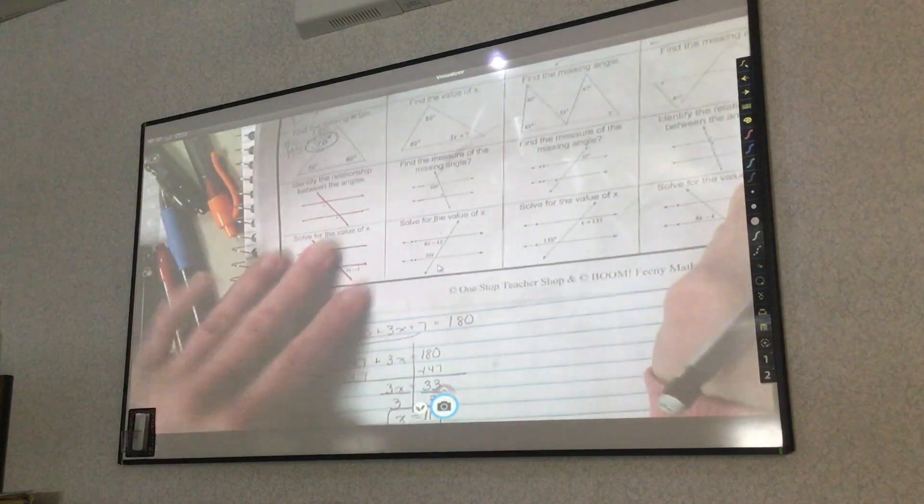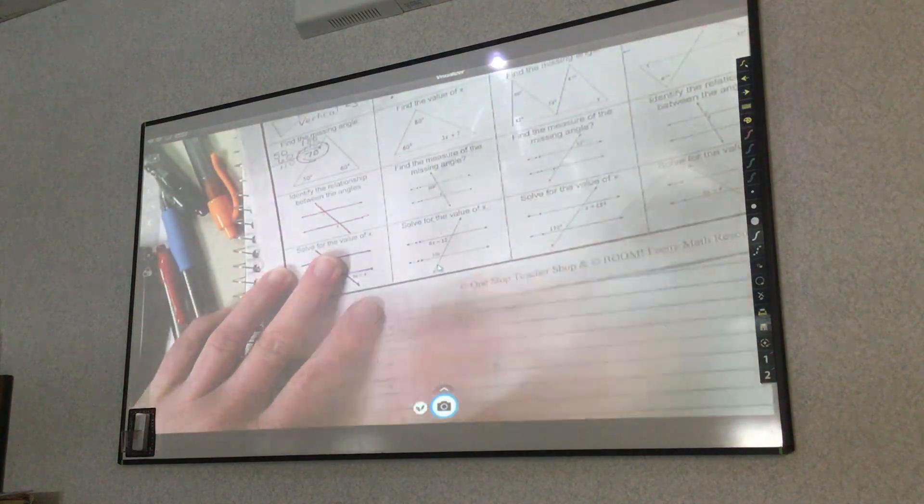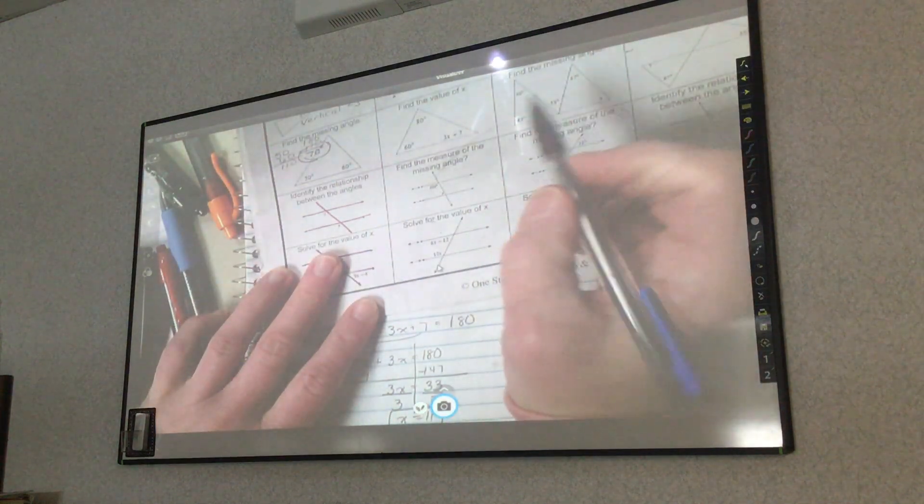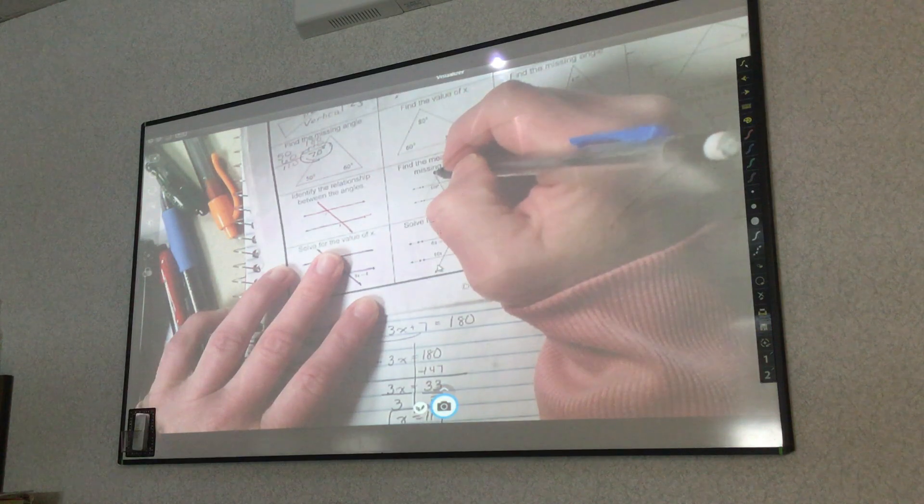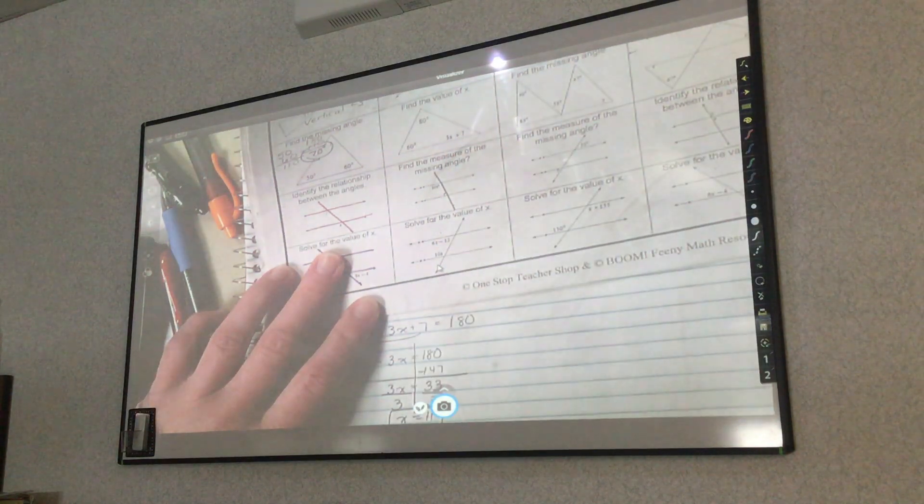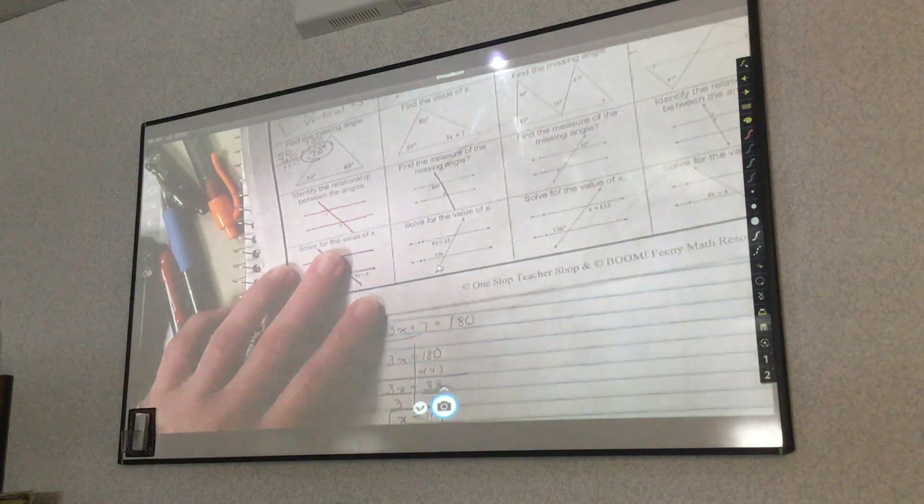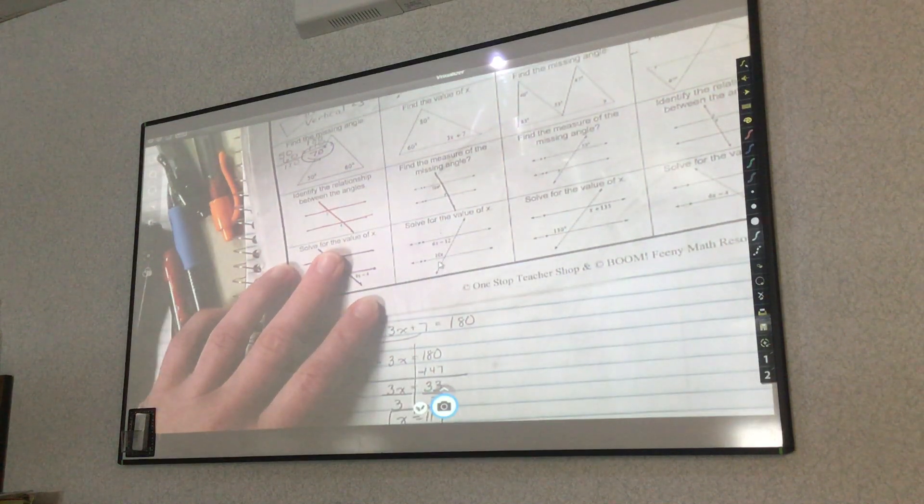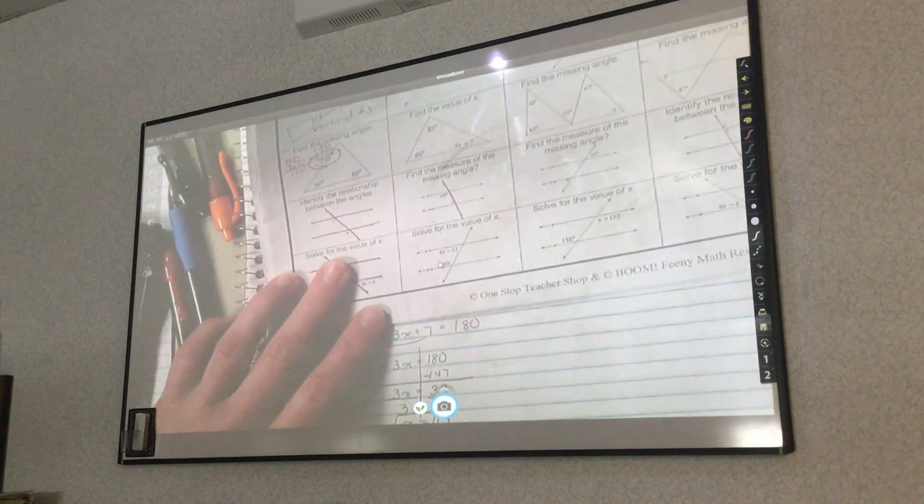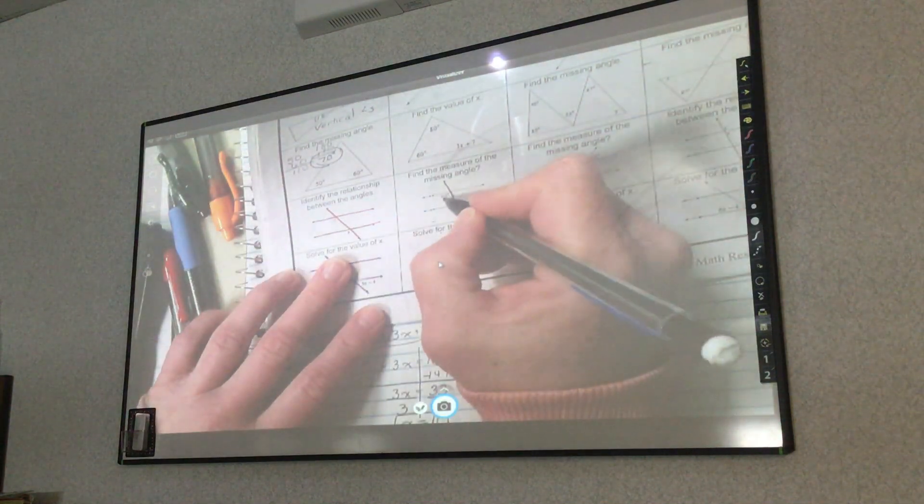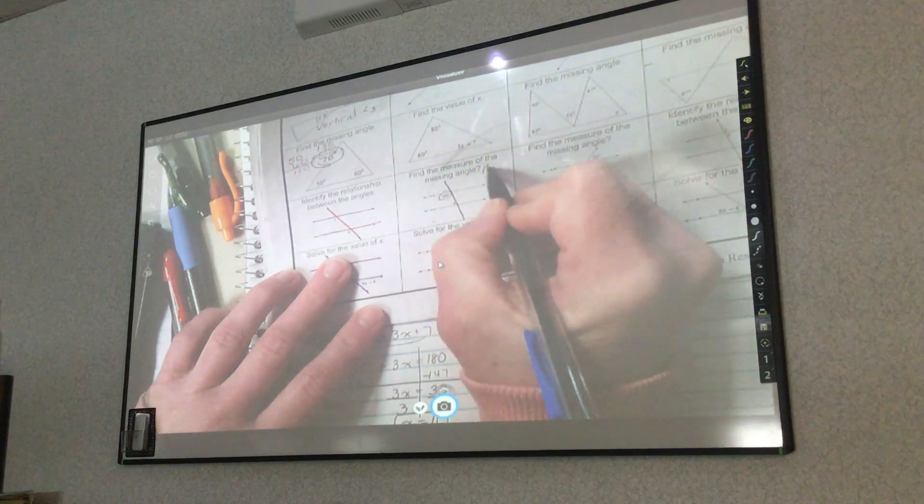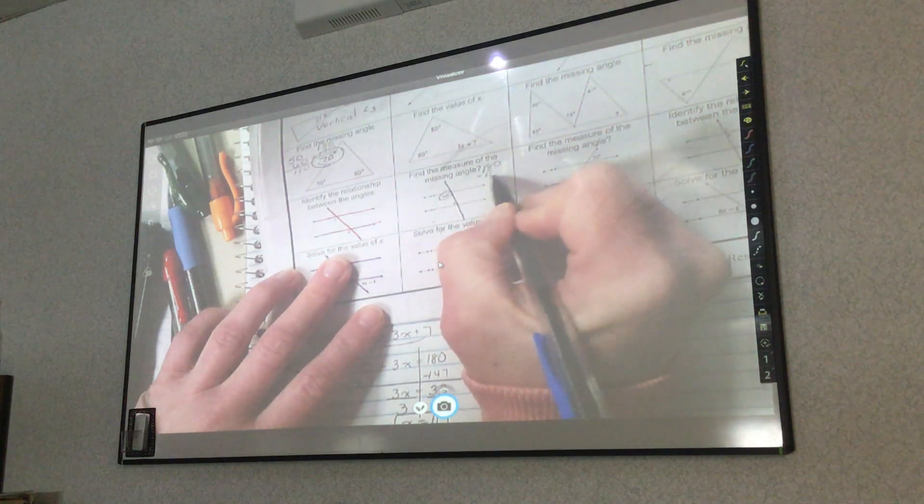Number 7, find the measure of the missing angle. We have to kind of go back to, you can think of it as supplementary angles where they're going to equal 180 degrees. And then we can also think about how they are sharing the same location. So if this is 109 degrees, I take 180 minus 109.